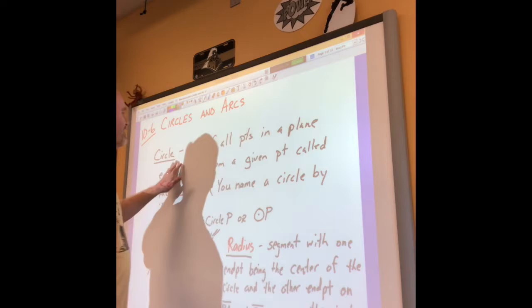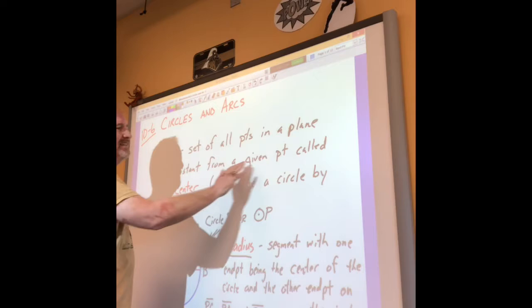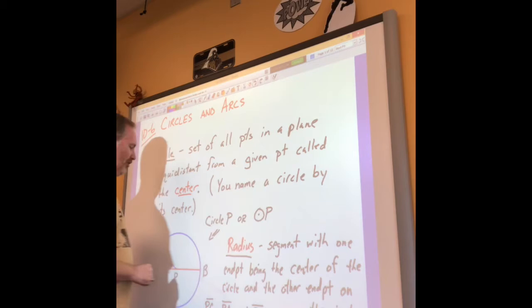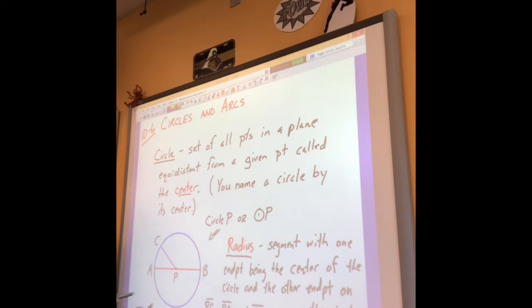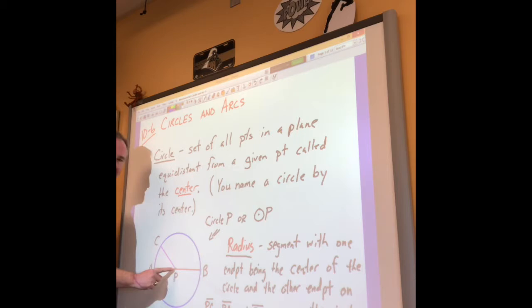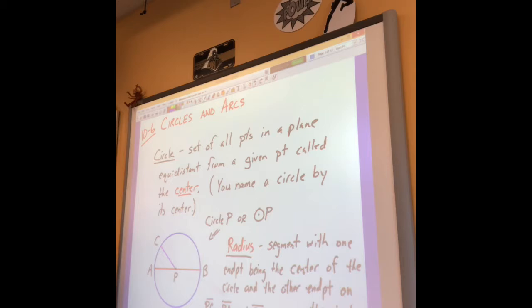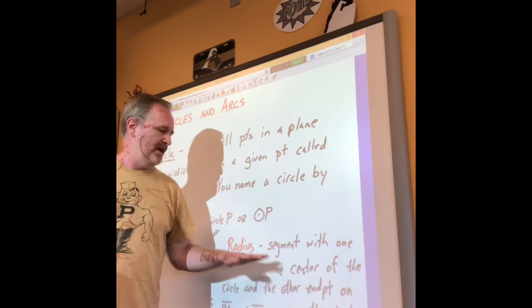A circle's true definition is a set of all points in a plane - meaning it's got to be flat - that are equidistant from a given point called the center. You name a circle by its center. So looking at this example, the center of the circle is the letter P, so this would be called circle P. Point P is the center of the circle, but it's not on the circle. This blue ring here is the circle - the stuff on the inside is not the circle.